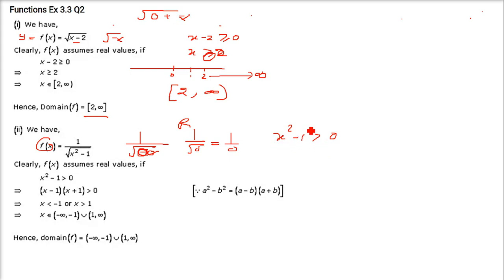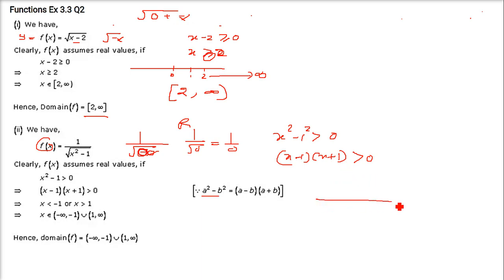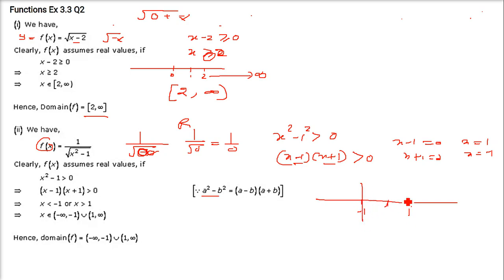There cannot be an equal sign here. So how do we solve this quadratic? We write x squared minus 1 as x squared minus 1 squared, which factors as (x minus 1)(x plus 1). Now just set each factor equal to 0: x minus 1 = 0 gives x = 1, and x plus 1 = 0 gives x = minus 1. So on the number line, we have minus 1 and 1, giving us 3 partitions.